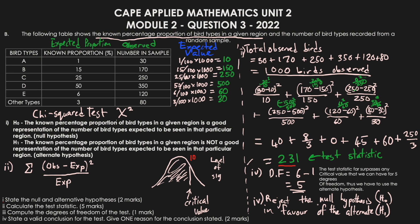So we rejected the null hypothesis in favor of the alternate hypothesis. This question tested the understanding of critical values and how to draw conclusions even when a significance level is not explicitly provided. Continue to practice, and all the best in your exams.